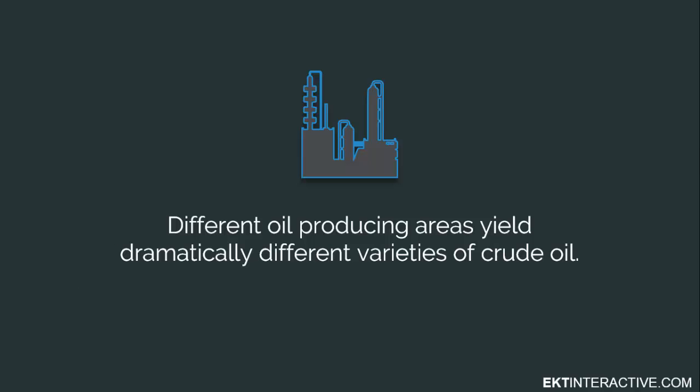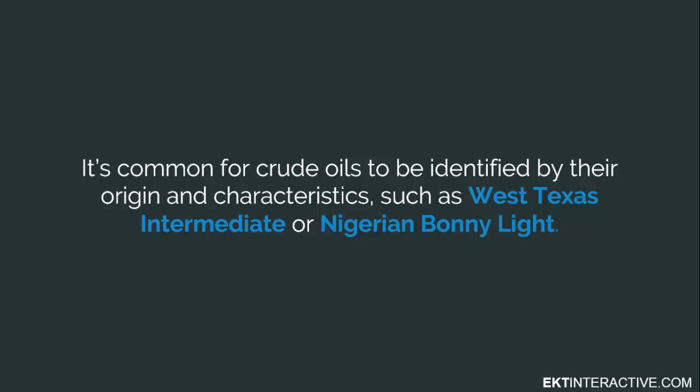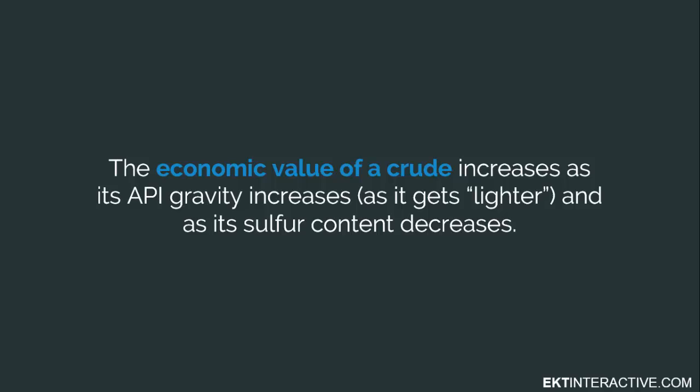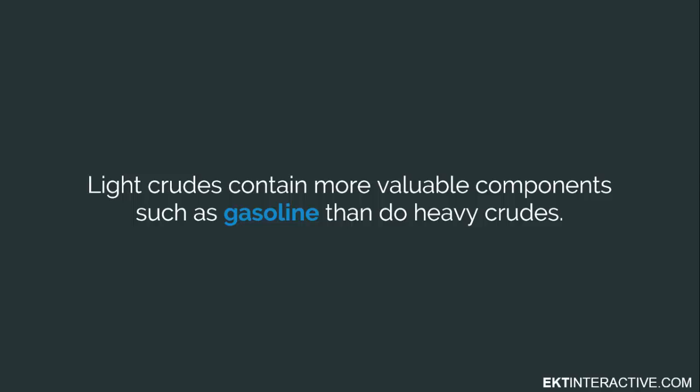Different oil producing areas yield dramatically different varieties of crude oil. This is why it is common for crude oils to be identified by their origin and characteristics, such as West Texas Intermediate or Nigerian Bonnie Light. The economic value of a crude increases as its API gravity increases, i.e., as it gets lighter and as its sulfur content decreases. Thus, a sweet light crude will command a higher price than a sour heavy crude. And this is because light crudes contain more valuable components, such as gasoline, than heavy crudes. And it is also costly to remove the high content of sulfur in a sour crude.